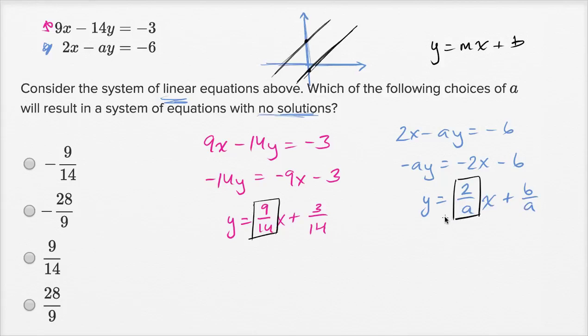they would have an infinite number of solutions because then it would be the same line. But let's solve for a. So we know that 9 over 14 needs to be equal to 2 over a. 2 over a.